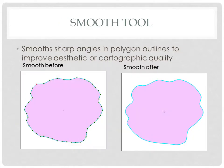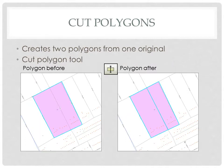Smoothing is very helpful because it smooths sharp angles in a polygon to improve the aesthetic or cartographic quality — here's the polygon before and after smoothing. Cutting polygons can be very useful because you can create two polygons from one original polygon. For example, you might need to divide a parcel: use the cut polygon tool to simply create two polygons and add the details to the data set for the second polygon.